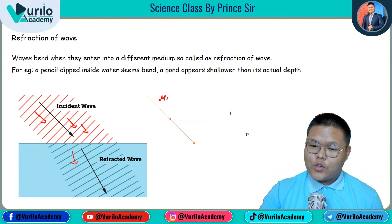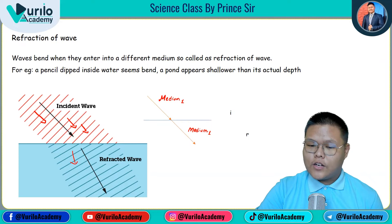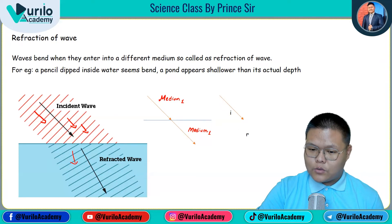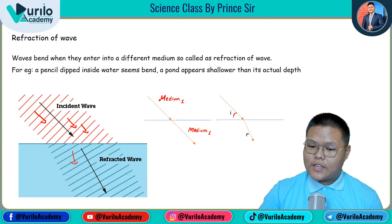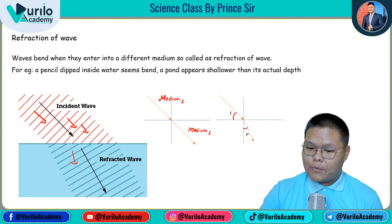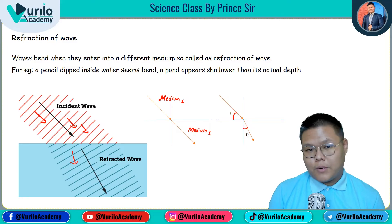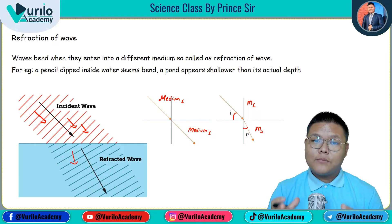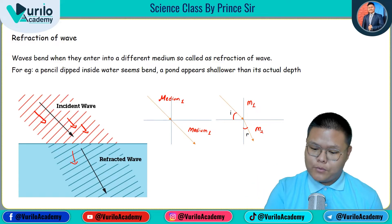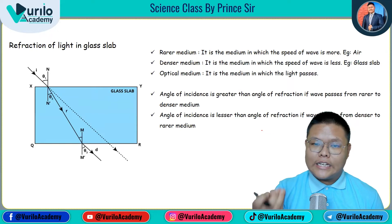In medium 1 or medium 2, you can see this condition. You can change the incident and change the medium, and then you can observe the effect on the light. This is the angle of incidence, and you can draw the normal. This is the angle of refraction. Refraction of light in a glass slab follows the same concept.